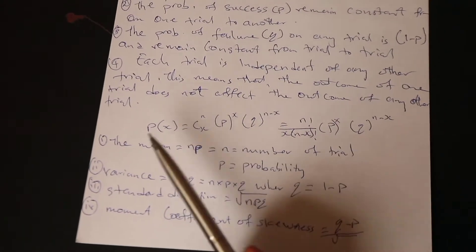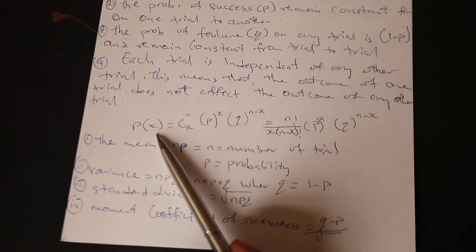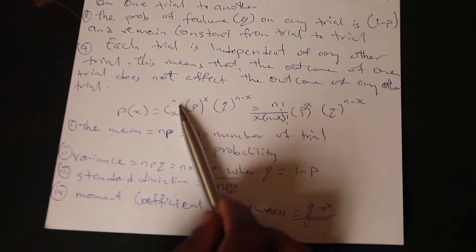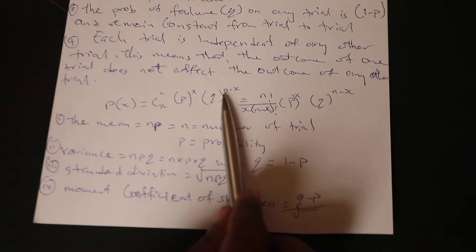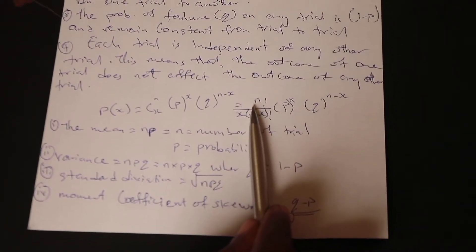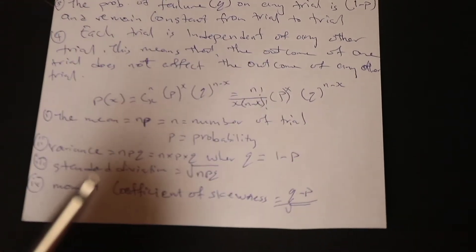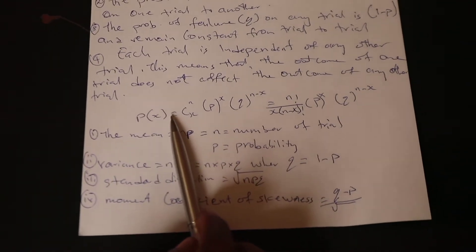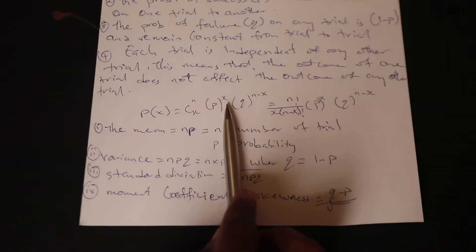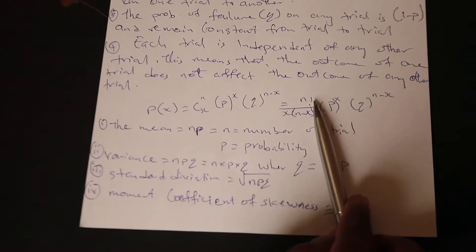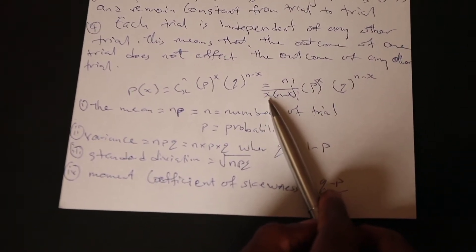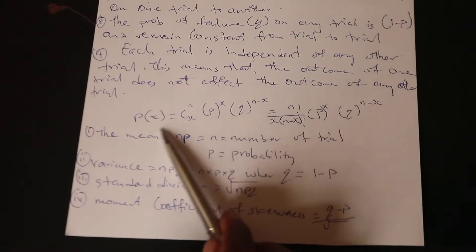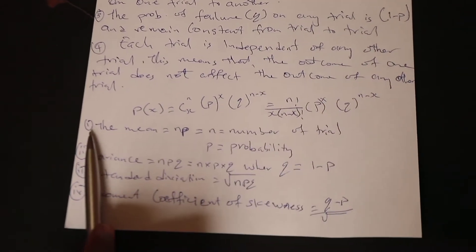So let's move further. Here's the formula for binomial distribution. If any question has been given to you to solve on binomial distribution, we say: P(X) = C(n, x) · p^x · q^(n−x), which equals n! / [x! · (n−x)!] · p^x · q^(n−x). This is the formula for binomial distribution.